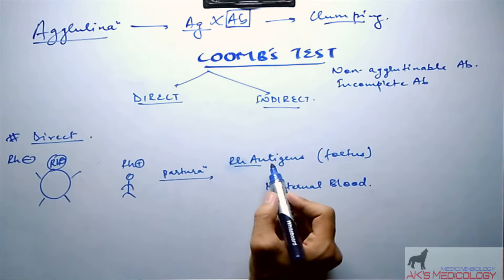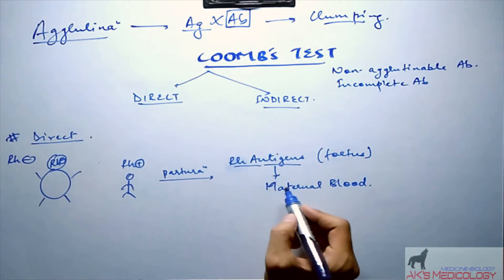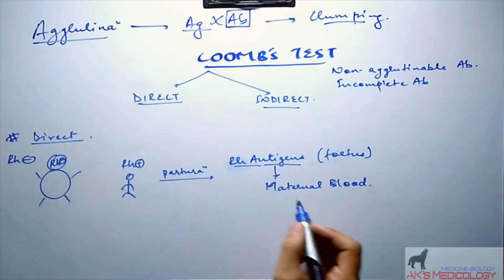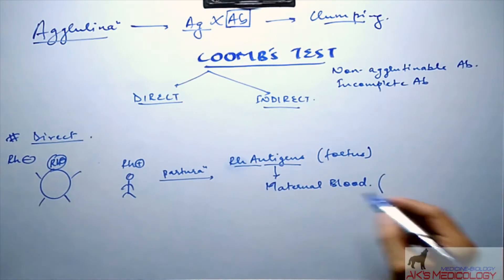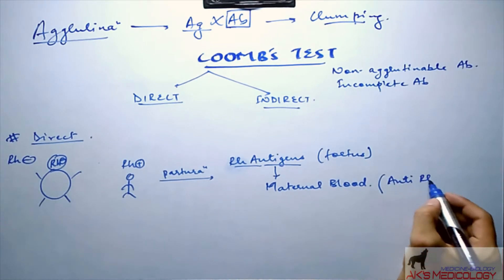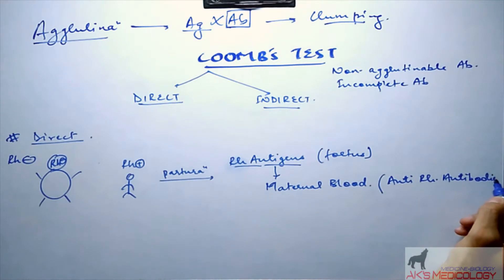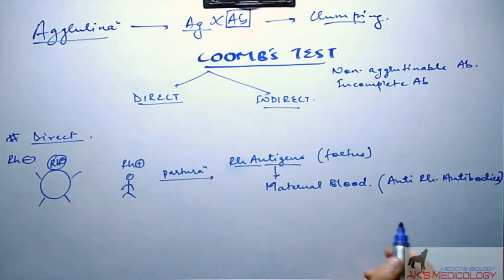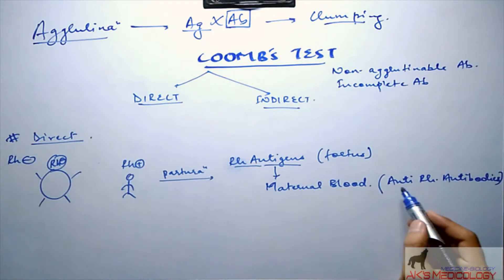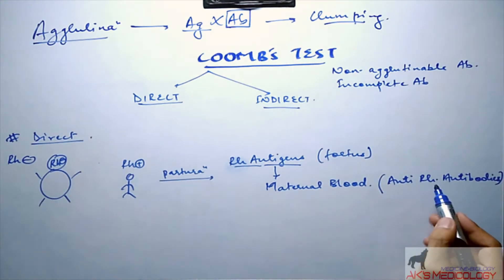As these Rh antigens are foreign to the maternal blood, when they come in contact with the maternal blood, the immune system of the mother forms anti-Rh antibodies against these Rh antigens.